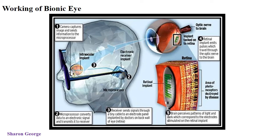At the retinal implant, the electrode emits pulses which travel through the optic nerve to the brain. Once the brain starts decoding the signal, we are able to identify what the subject is. This whole process is very fast, so we are able to see in a manner similar to the human eye. This is the working of the bionic eye system.